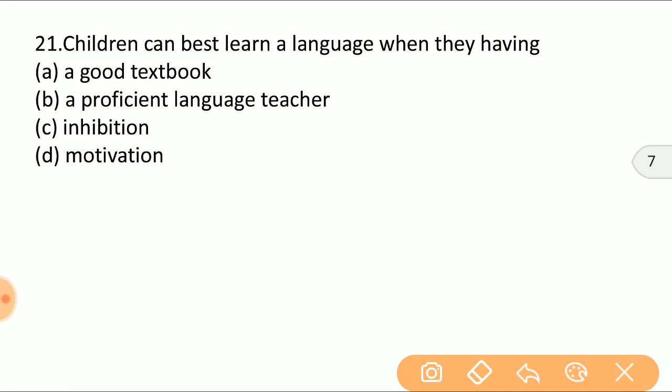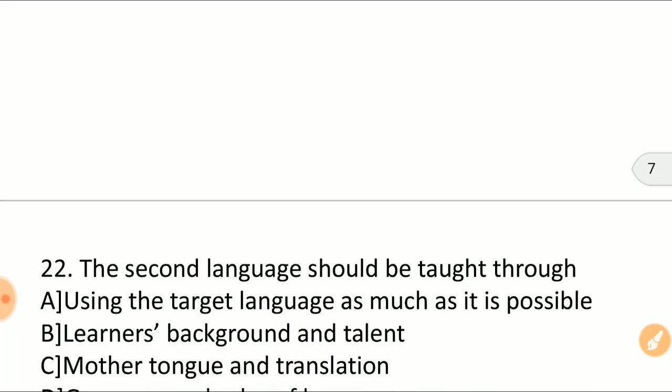The right answer is motivation. Motivation can help a child learn a language in the best way. On the other hand, inhibition provides a hindrance and makes a child self-conscious and unable to act in a relaxed and natural way. So the right answer is motivation.